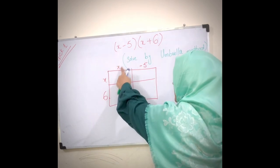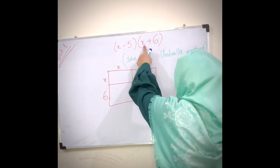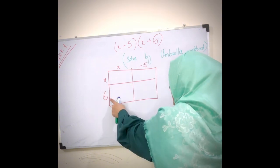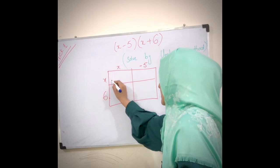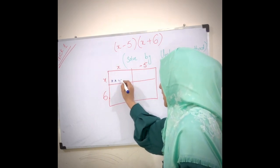This is (x - 5)(x + 6). How can we multiply? This is x, this is x, is equal to x.